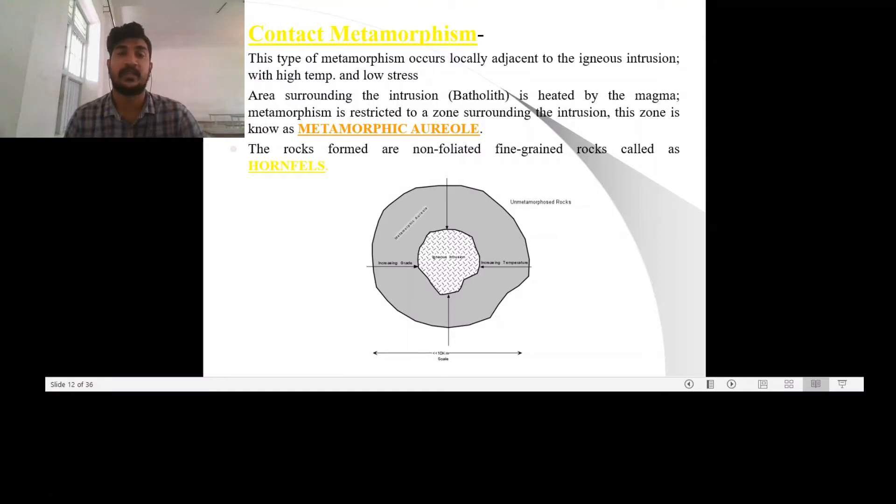Then in the middle range, there occur the hydrous minerals such as amphibole and epidote. And on the lower intensity, minerals like chlorite and serpentine will be formed at the farther end from the contact aureole.